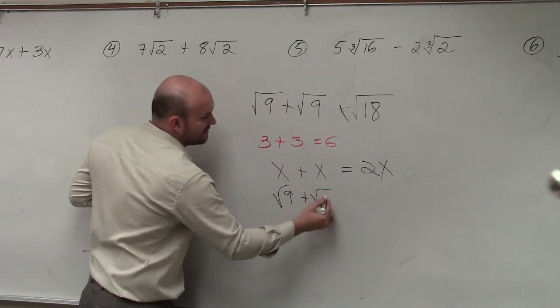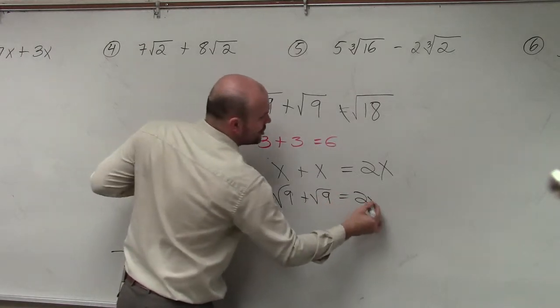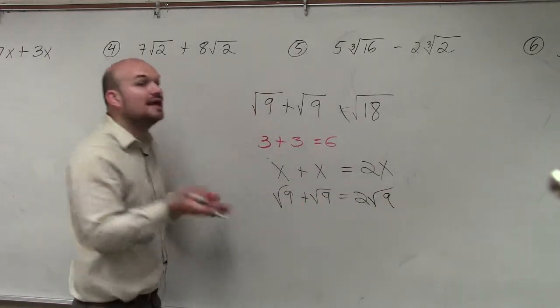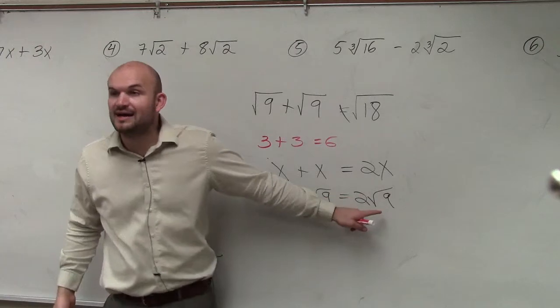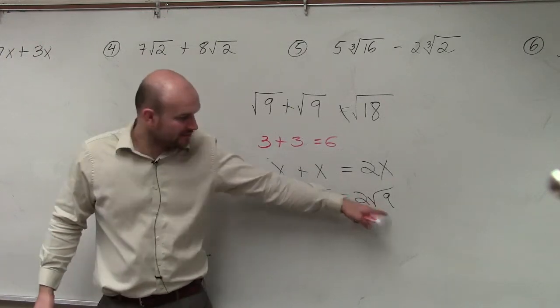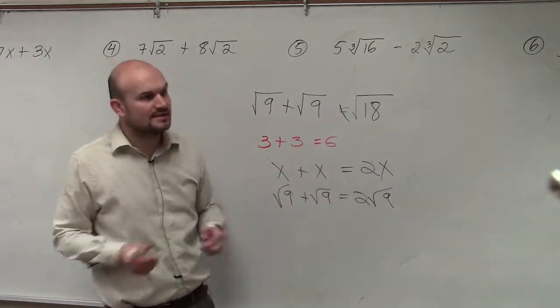So therefore, if I have the square root of 9 plus the square root of 9, that equals 2 square root of 9. And let's see if that works. Square root of 9 is 3. 3 times 2 is 6, which we know is the correct answer.